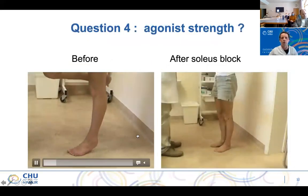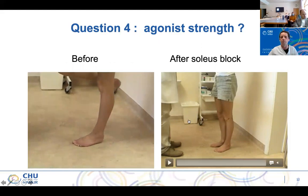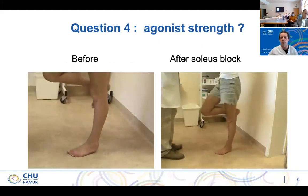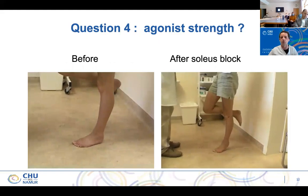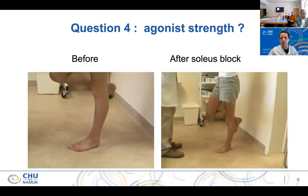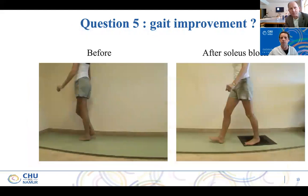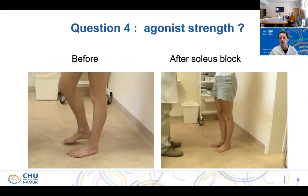We are also able to assess the agonist strength: will reducing soleus muscle strength impact the patient? In such case the answer is no, because she is able to actively perform a plantar flexion because the gastrocnemius are preserved. Usually we think that gastrocnemius are important for propulsion. Do you always preserve the gastrocnemius? Not in every case, but if the gait improvement is correct after soleus block, I will not follow with a gastroc block. But if it's not enough, I'll do it after gastroc or tibialis posterior.